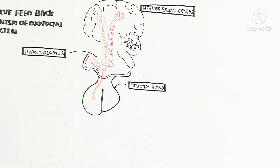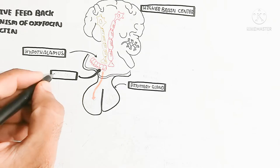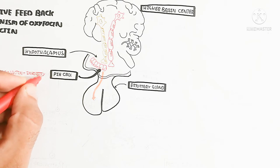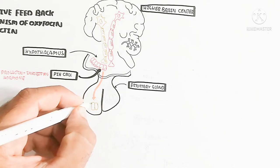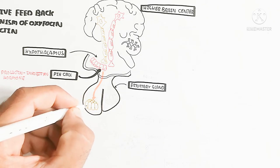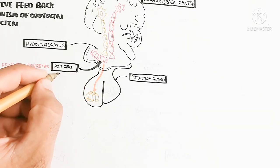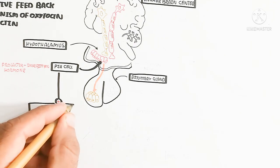The hypothalamus contains neurosecretory cells which stimulate different hormones from the gland. PIH cells — prolactin inhibiting hormone cells — are present in the hypothalamus.